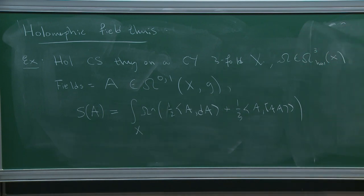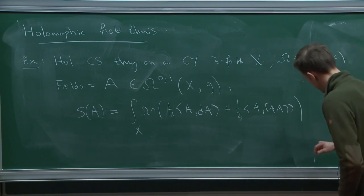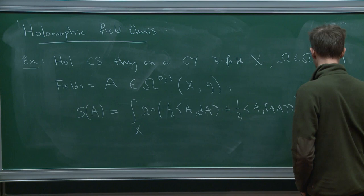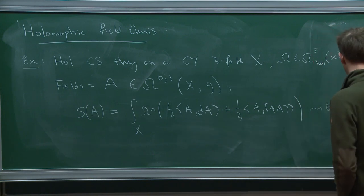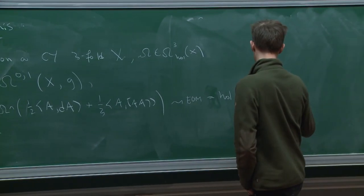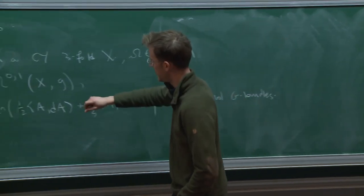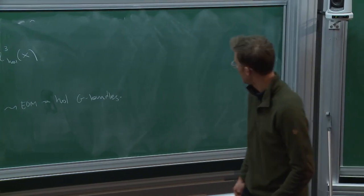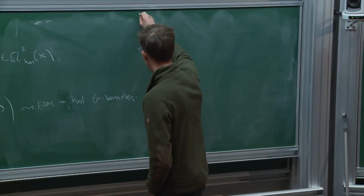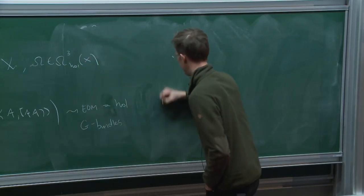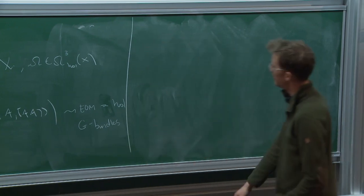Why do I want to think about this as a holomorphic theory? Its solutions to the equations of motion generically depend on some interesting complex structure on the underlying objects. In this example, the equations of motion exactly pick out the holomorphic G-bundles. In this perturbative description I'm describing deformations of the trivial holomorphic G-bundle on X, but you can do this near any holomorphic G-bundle as well. This is the general flavor of theories I have in mind when I say holomorphic field theory.